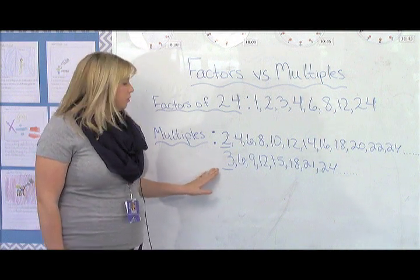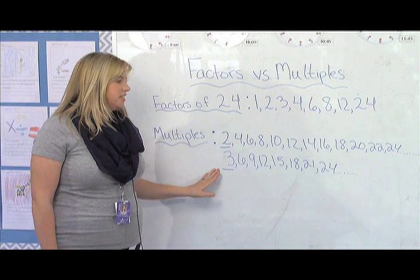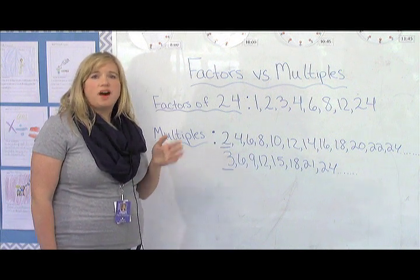Multiples of 3 would be 3, 6, 9, 12, 15, 18, 21, 24, and you can go on and on.